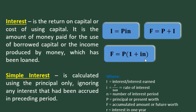If you want to get the present worth given the future worth, it's simply P equals F over the quantity (1 plus I times N), which is equivalent to F times (1 plus IN) raised to negative 1.